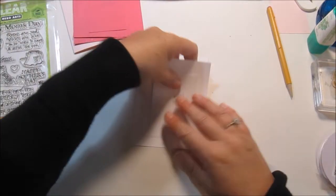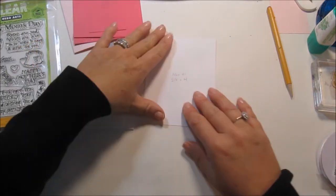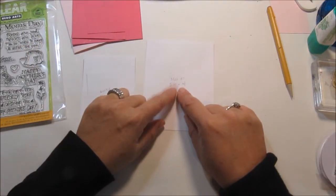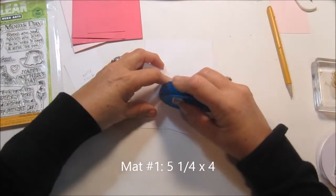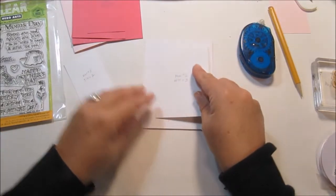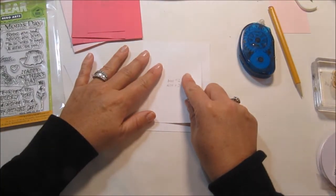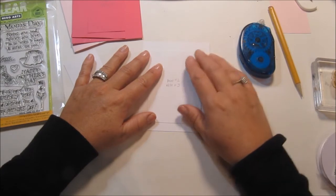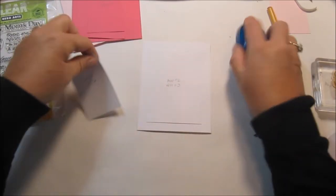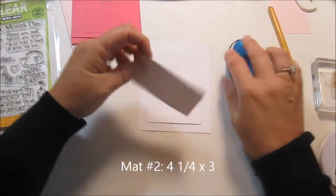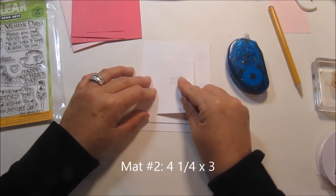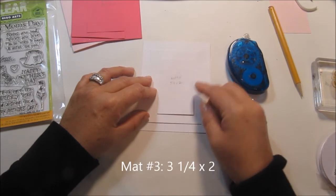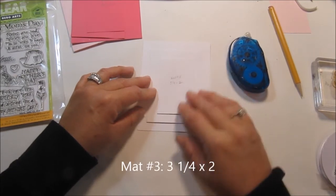The first thing we want to do is layer our mats. The first mat is five and a quarter by four. You want to just slightly adhere it so it stays down when we're stamping. Then the next mat is four and a quarter by three, and then the next mat is three and a quarter by two.